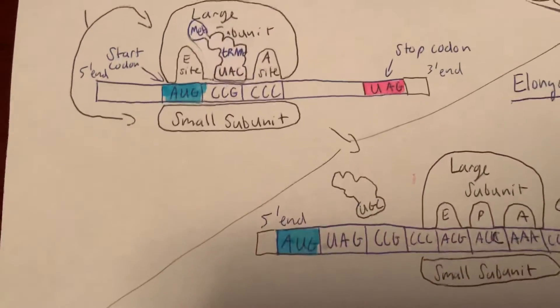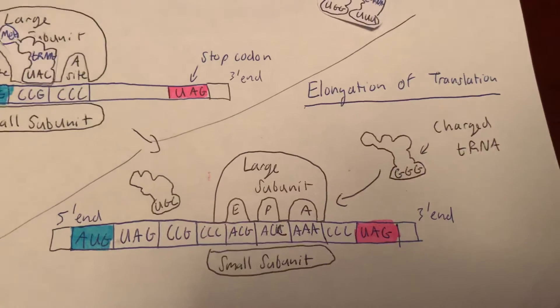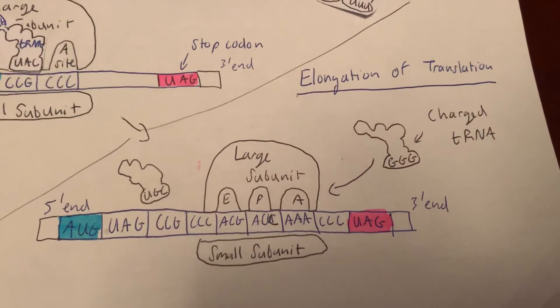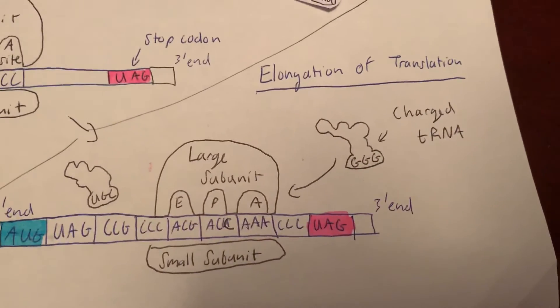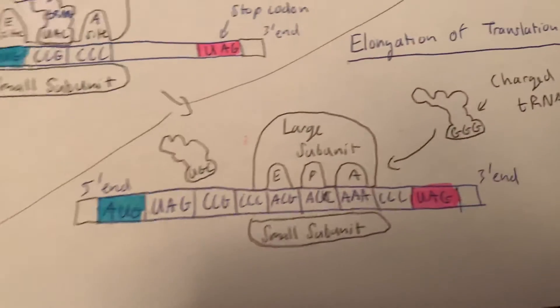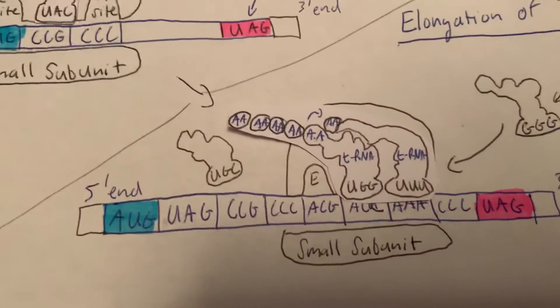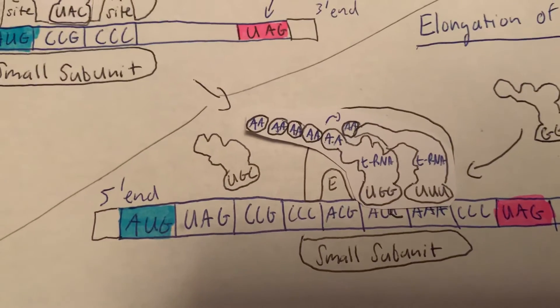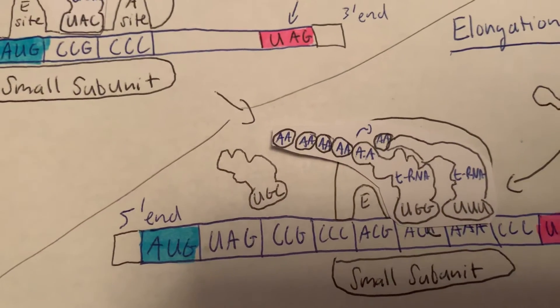After initiation comes elongation of translation. The charged tRNA comes through the A site and then connects to the other tRNA at the P site, linking these amino acids together to extend the polypeptide chain.